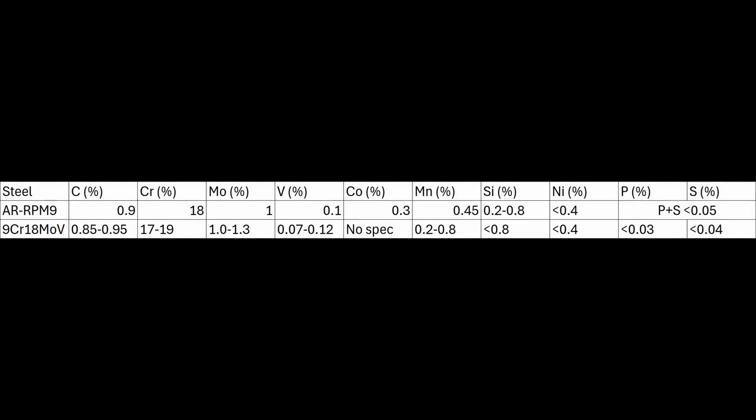The only potentially relevant change to the composition versus 9Cr18MoV is cobalt. They said that there was 0.3% cobalt. Now I wasn't sure, is this a maximum for cobalt? Because cobalt can be present in a lot of recycled steel. And 0.3% is a very small amount. If you were given two steels, one with 0.3% cobalt and one without cobalt, I would be surprised if you could tell the difference in terms of the properties. So why 0.3% cobalt? Maybe that's their excuse to call it a new steel.